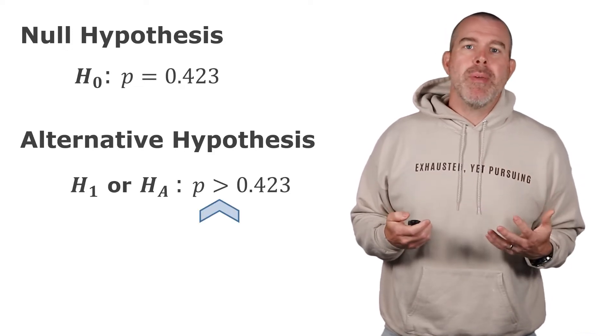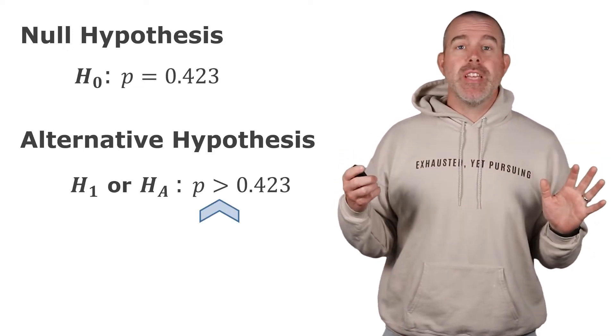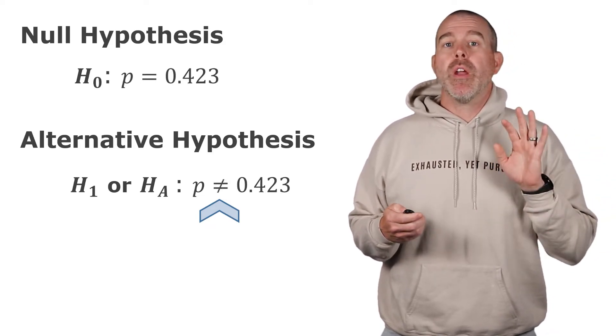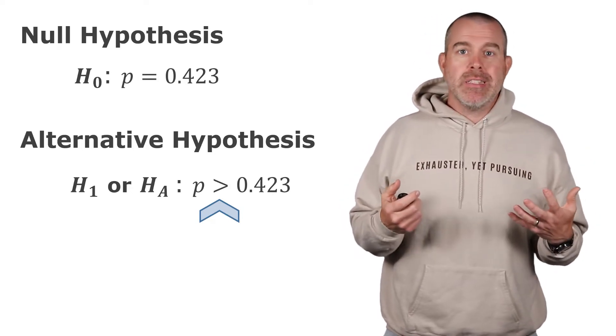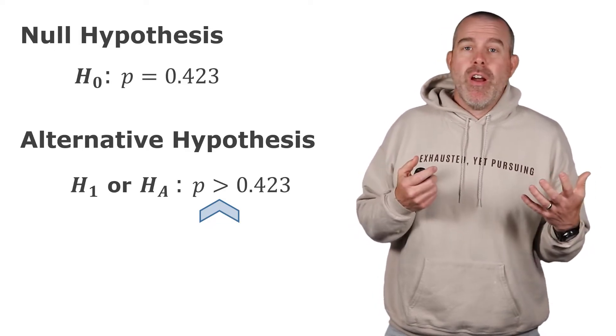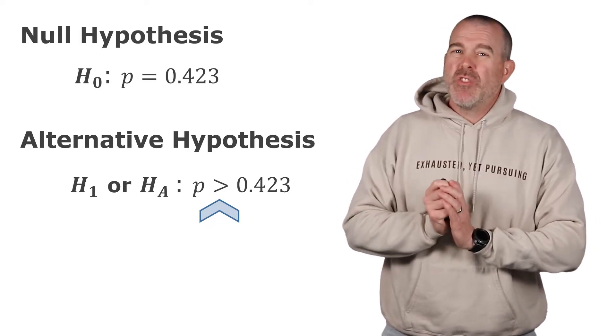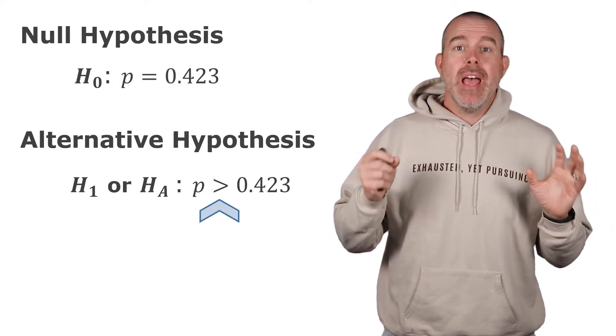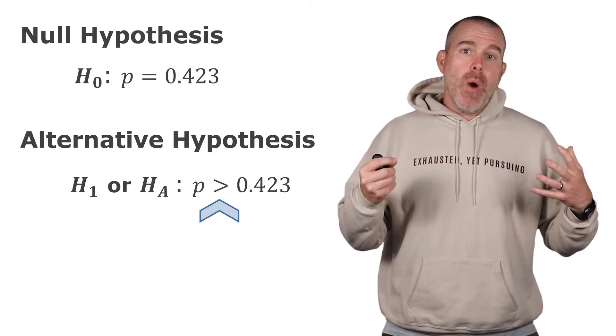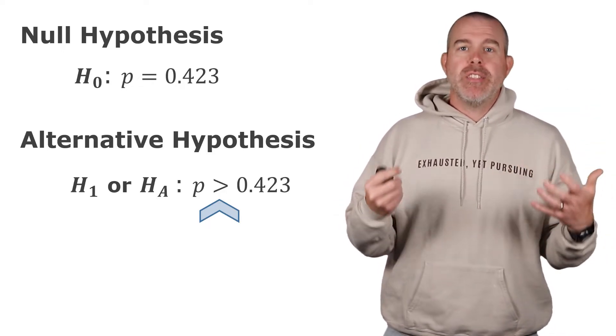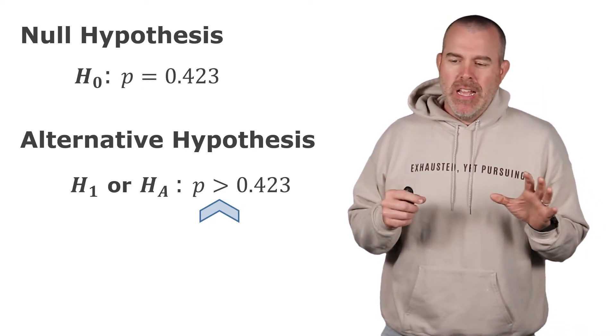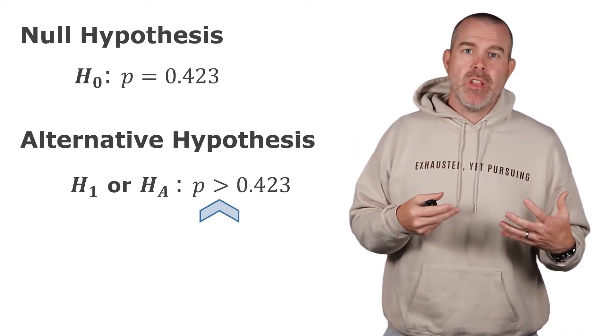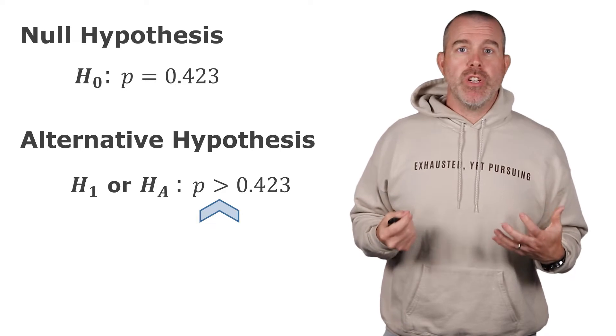For our specific example, the null hypothesis is that the proportion is the same as the US census, 42.3%. Our alternative claim - we're going to be careful here - we're claiming that it's greater than. Now, for other tests it might be less than or not equal to. We're going to do greater than. I want to be really careful though. We really did this backwards. We looked at our data and said, oh, it's 56.9%, I wonder if ours is statistically greater. We really should have these questions before we look at the data. That's what statisticians do - they have some question, then they look at the data and see how the data answers their question. You shouldn't be digging into data and seeing something different, then testing if there's a statistical difference.